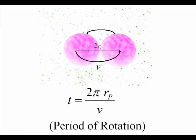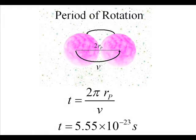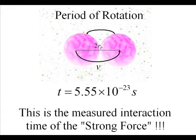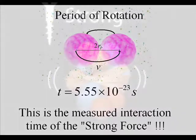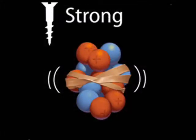If we then calculate the period of rotation of this system, we get 5.55 times 10 to the negative 23 seconds, which also happens to be the characteristic interaction time of the strong nuclear force.